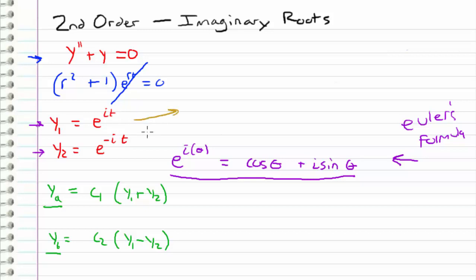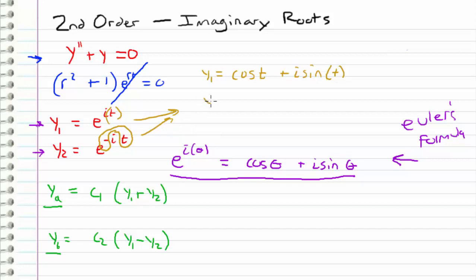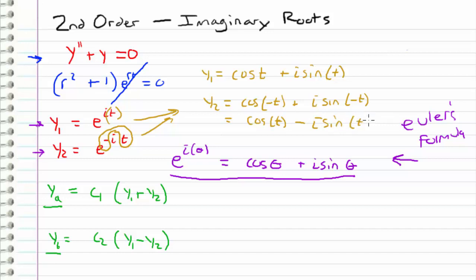I want to rewrite y1 and y2 using Euler's formula. The coefficient in front of i in y1 is just t, so y1 equals cosine of t plus i times sine of t. For y2, the coefficient in front of i is negative t, so y2 equals cosine of negative t plus i times sine of negative t. Since cosine is an even function and sine is an odd function, this simplifies to cosine of t minus i times sine of t.